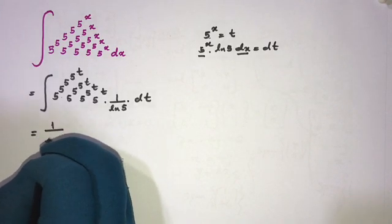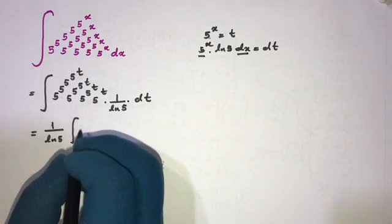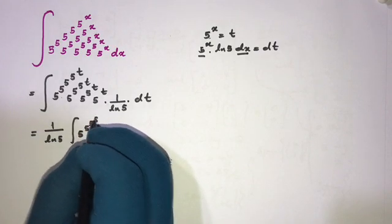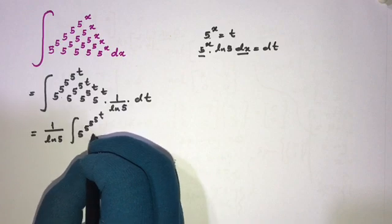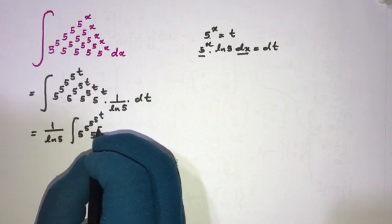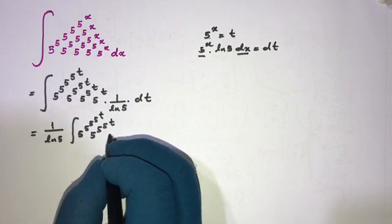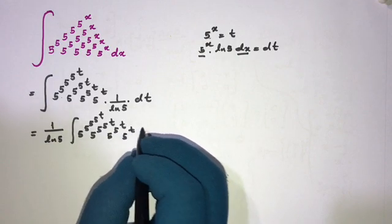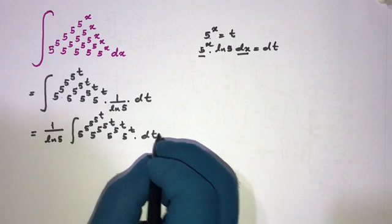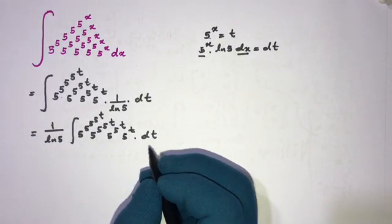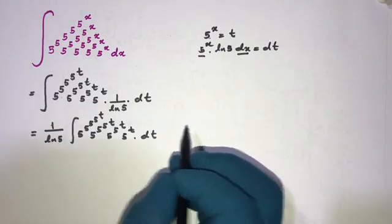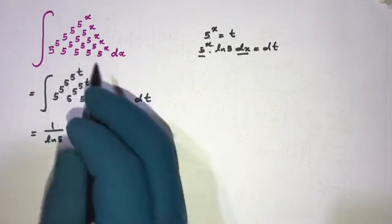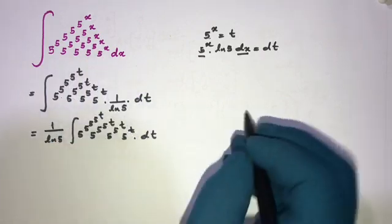So we now have (1 over ln 5) times the integral of 5 to the 5 to the 5 to the 5 to the t, times 5 to the t dt. This integral has the same nested structure, so we can apply the substitution method again.